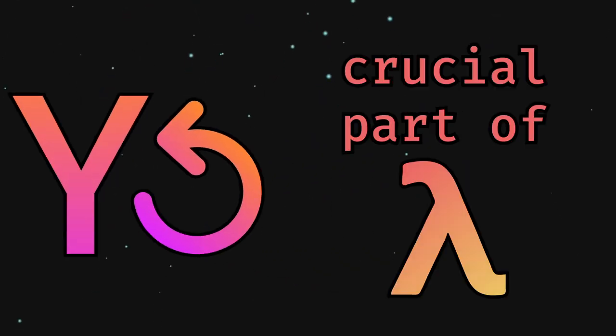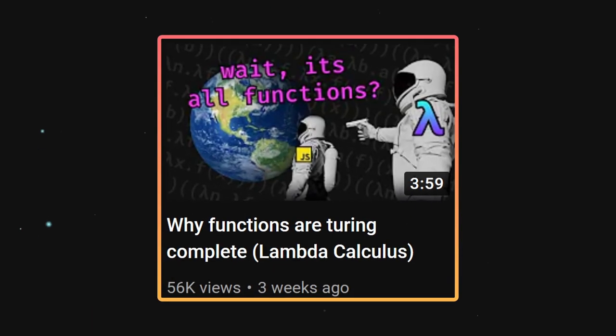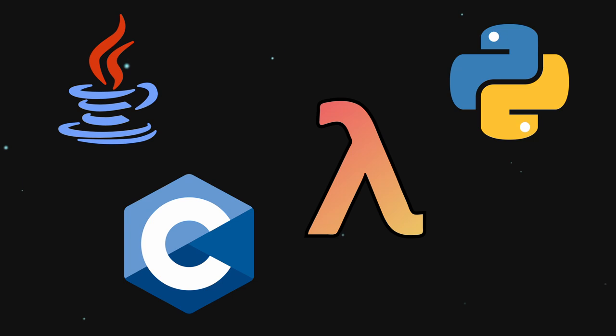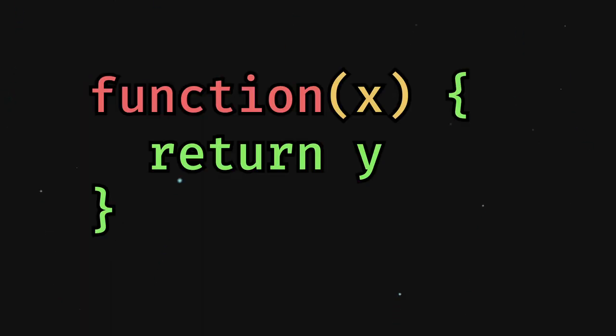The Y Combinator is a crucial part of what makes the simplest programming language actually work. For those who haven't seen my latest video, Lambda Calculus is a mathematical model, now programming language, in which all you can do is create a function with a single argument and returning something else.